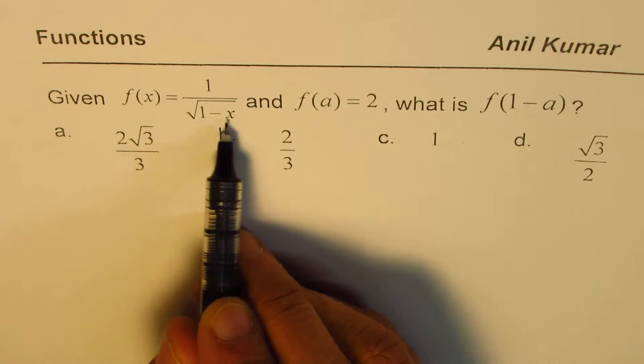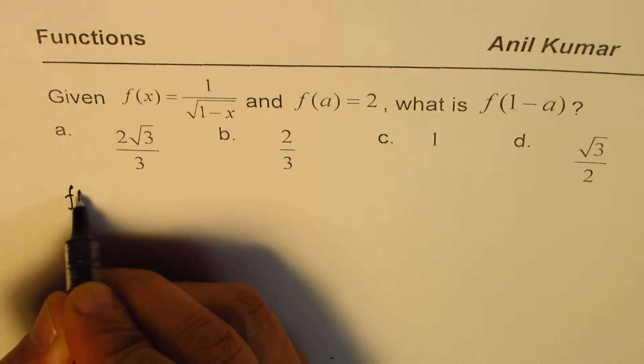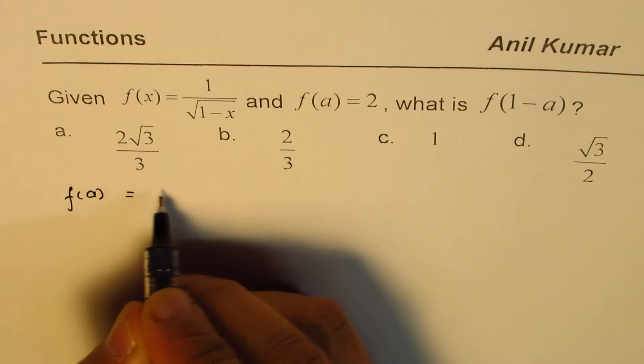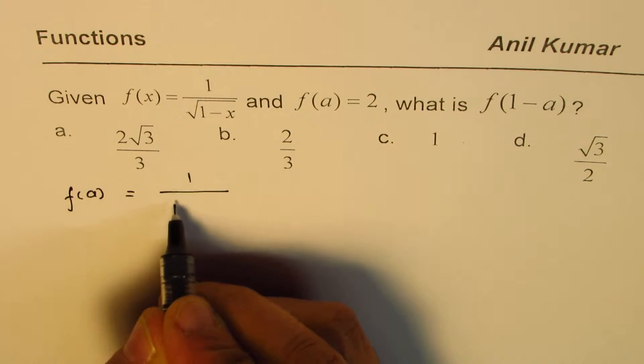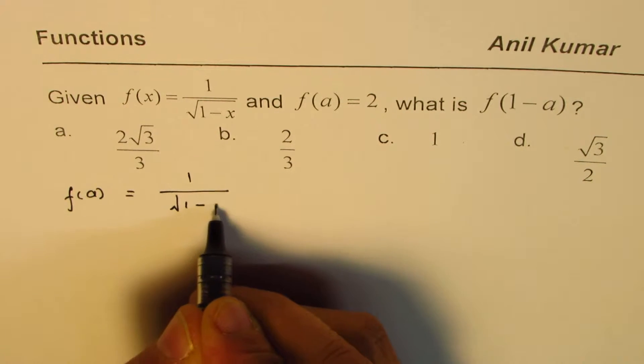If f of x is 1 over square root of 1 minus x, what is f of a? f of a will be, we'll replace x with a. So, it'll be 1 over square root of 1 minus a.